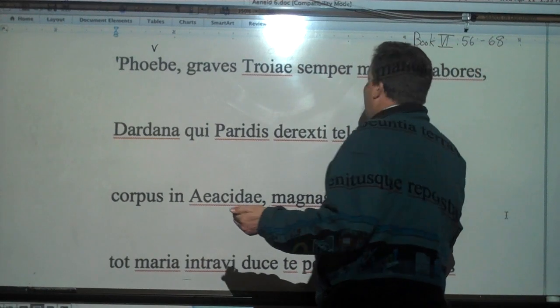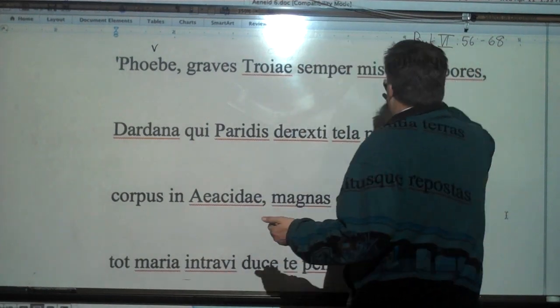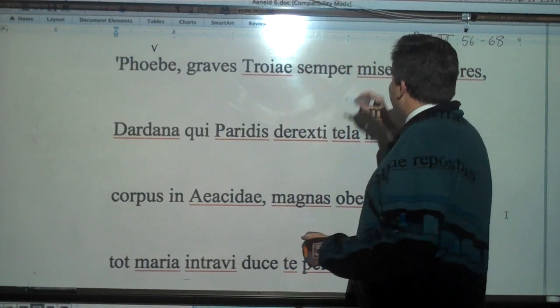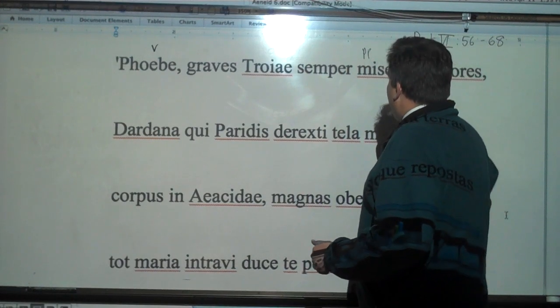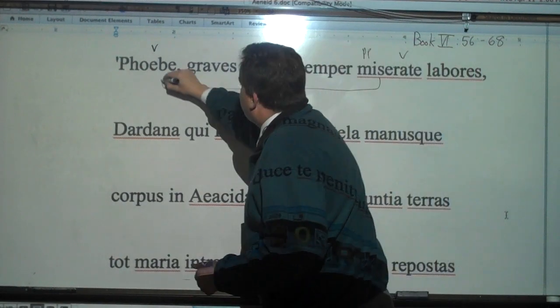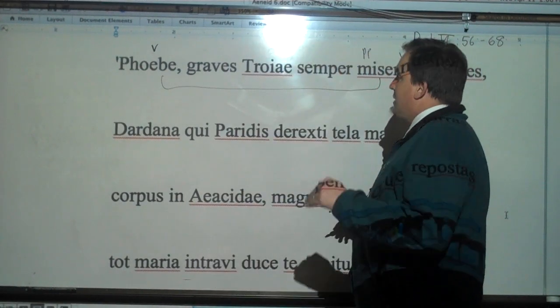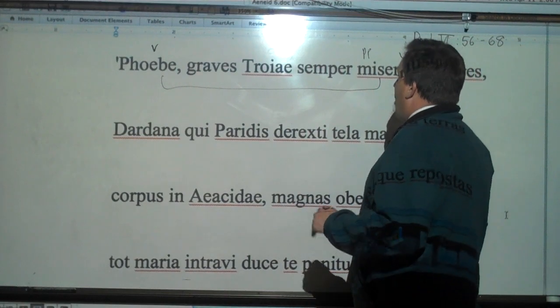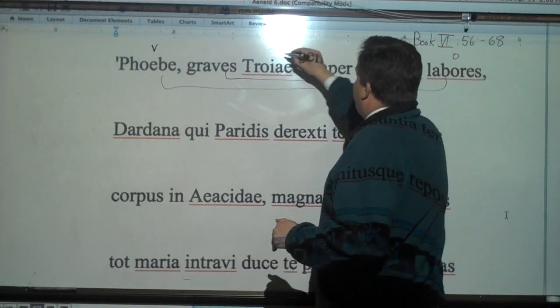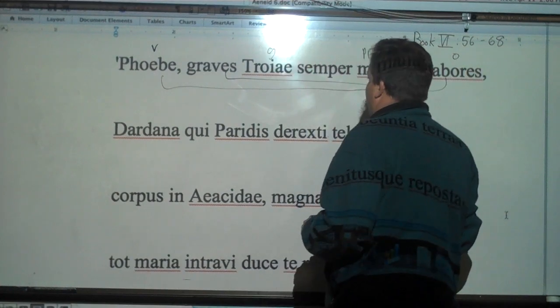o Phoebus. And then we have another vocative here as well. Miserate. Very important. This comes from misereor, pity. It's the perfect participle deponent. Having pity. So let's go ahead and connect this up to Phoebus. So Phoebus having pity, always having pity, the graves labores of Troy, the heavy labors of Troy.